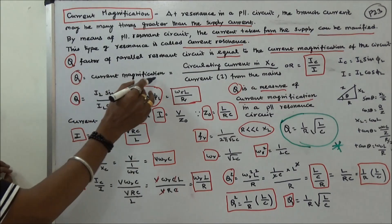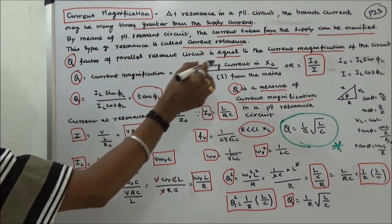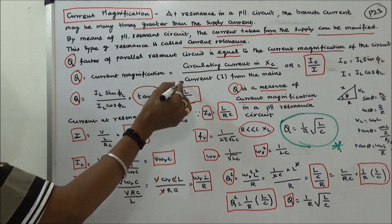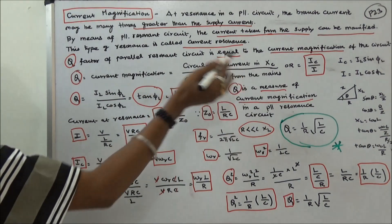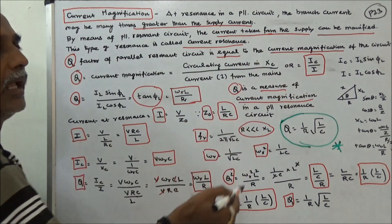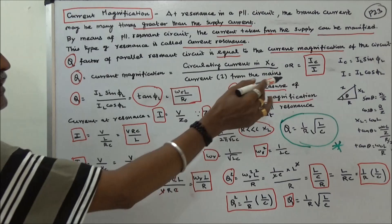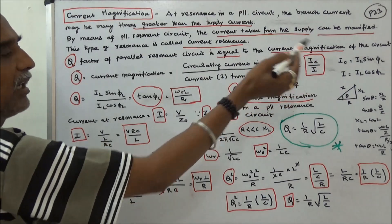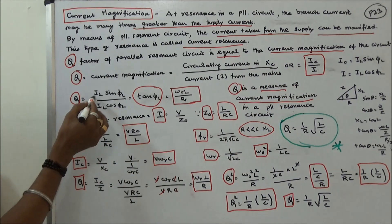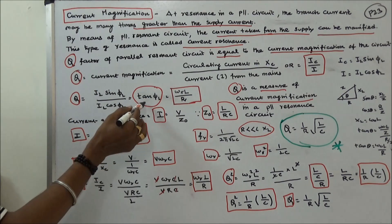Q is equal to current magnification, which equals the circulating current IC divided by the supply current I. Here IC is equal to IL times sin(θL), and I is equal to IL times cos(θL). Therefore Q equals IL·sin(θL) divided by IL·cos(θL), which simplifies to tan(θL).